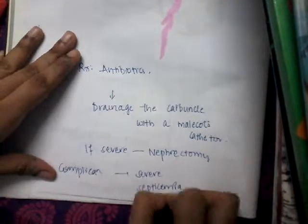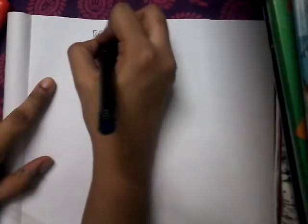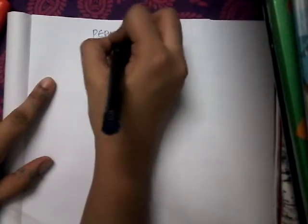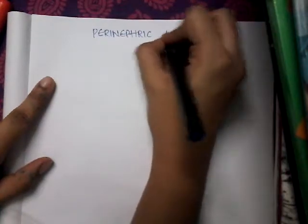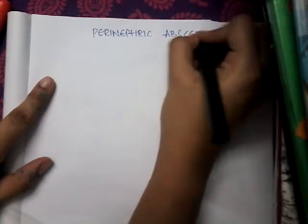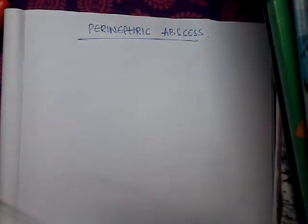So that is about renal carbuncle. In the next class, I will explain about perinephric abscess. If you have any doubts, please comment in the comment section. Please subscribe to the channel for more videos.